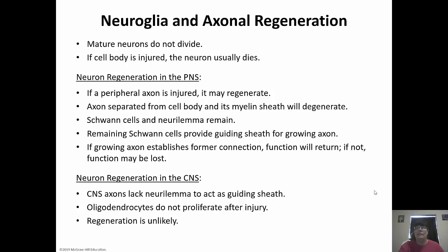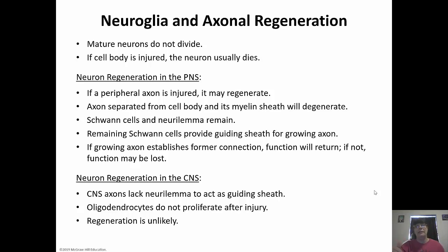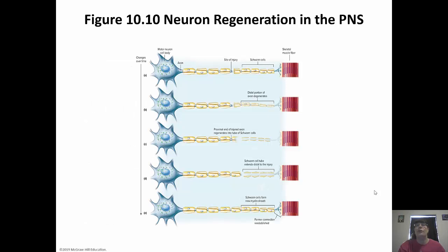Neuron regeneration in the central nervous system is different because CNS axons do not have a neurolemma to act as a guide, and oligodendrocytes do not proliferate after injury. So if you get your pinky cut off, they can reattach it and restore function because those axons can grow and make former connections via Schwann cells. But if you sustain a spinal cord injury, you'll most likely be paralyzed from the point of injury down because oligodendrocytes do not regenerate. The Schwann cells guide regeneration from the injury site, growing the new axon to reestablish the former connection.